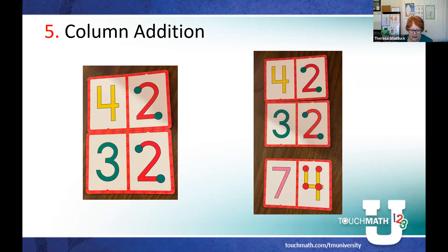In this example on the slide, I have the four two card and the three two. I could either write the answer or I could find the card that is the answer: the seven four. So I would read this as 42 plus 32 equals 74.